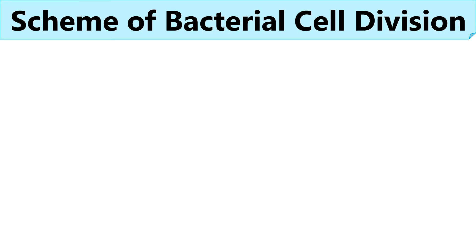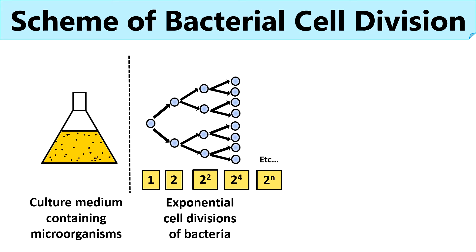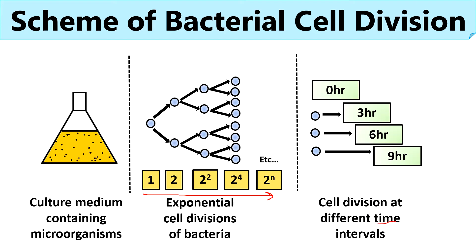Bacteria follow a specific growth pattern if conditions like temperature, pH, nutrient availability, etc. are favorable to them. Bacteria need a suitable culture medium and utilize the nutrients incorporated in the medium to undergo cell division. The nutritional factors are basically nitrogen, carbon, phosphorus, sulfur, and other trace elements in the nutrient medium. Cell division in bacteria follows a logarithmic pattern, showing an exponential increase in cell number. We can only see the distinct growth phases if the bacteria are incubated at different time intervals.